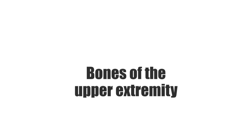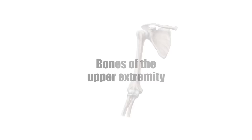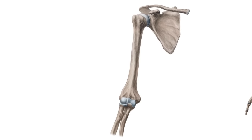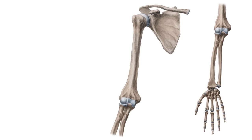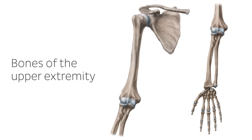Hey everybody, it's Matt from KenHub, and the focus of this video tutorial is to present an overview of the bones of the upper extremity. We will review each bone from proximal to distal, starting with the clavicle and ending with the phalanges.